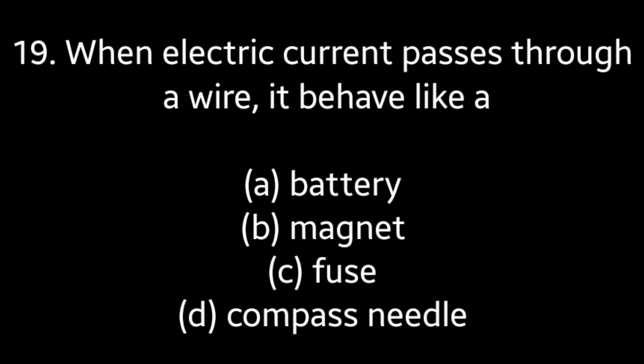Question No. 19: When electric current passes through a wire, it behaves like a — Battery, Magnet, Fuse, Compass needle. Answer is Option B: Magnet.